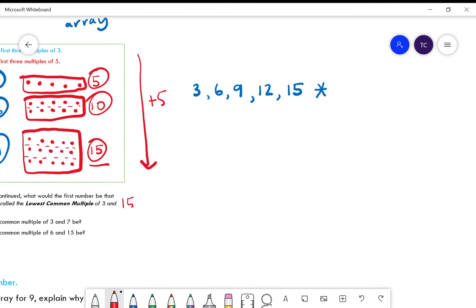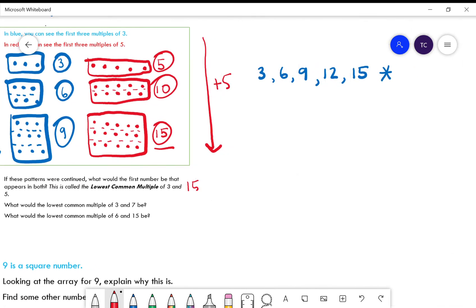So this question here, the lowest common multiple of 3 and 5 is 15. I'll just write down a few extras here just to be sure.